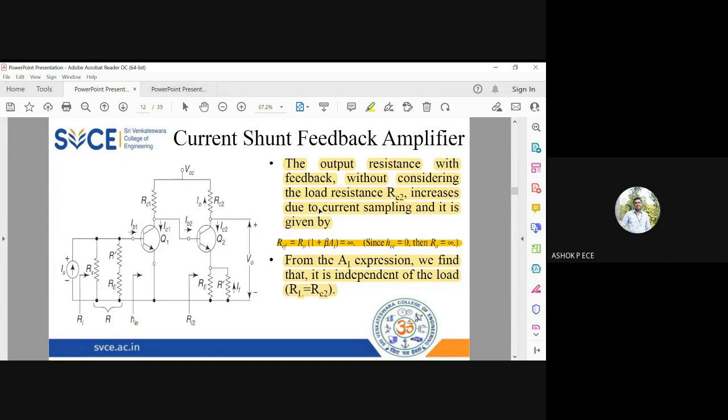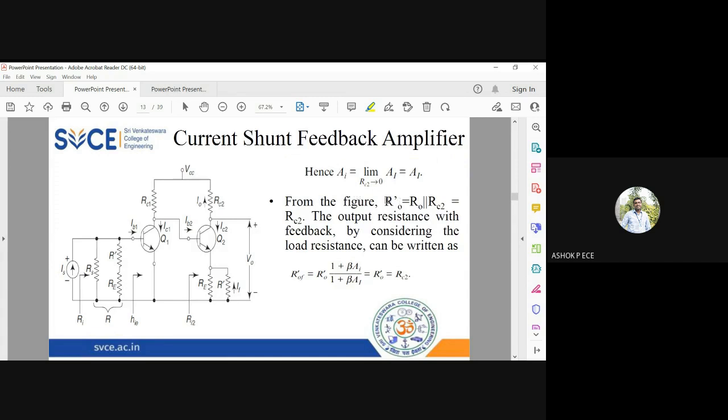From r naught you find r naught f. The same way, if you include the load resistance rc2, whatever you are going to find is going to be r naught dash. And from that, what you find is going to be r naught f dash.